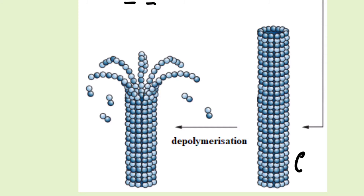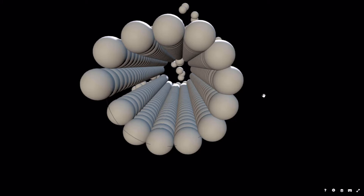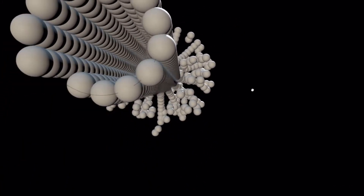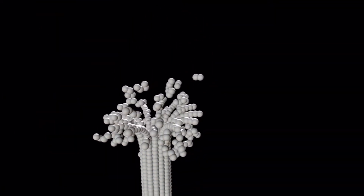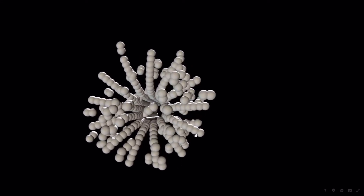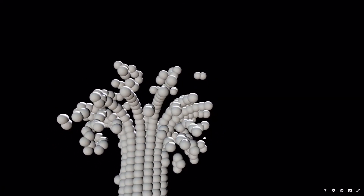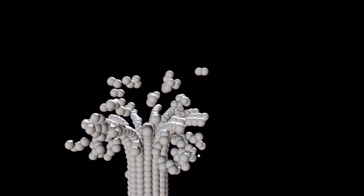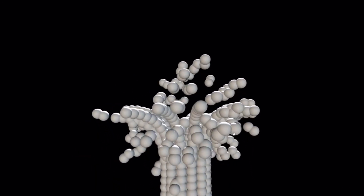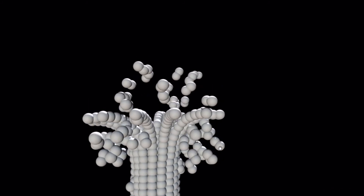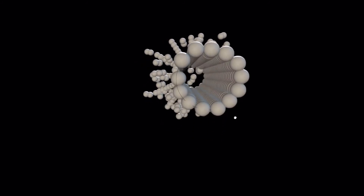When the microtubule has only GDP-bound heterodimers, it becomes highly unstable, the protofilaments start to uncurl, and the structure begins to depolymerize. As shown in this 3D representation, the microtubule is constantly polymerizing and depolymerizing. When only GDP-bound heterodimers remain, instability leads to depolymerization at the plus end of the microtubule.